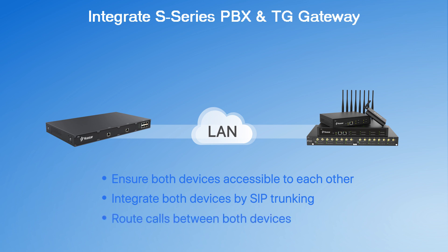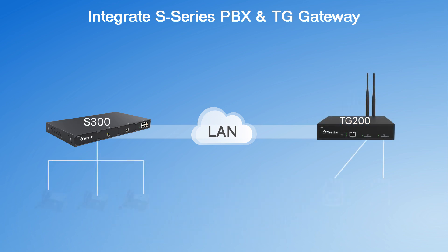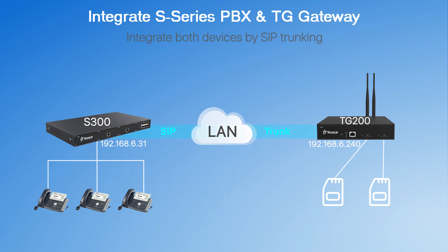The only thing left is figuring out the call routing. Take this scenario as an example: the S300 and TG200 have been deployed in the same local network environment. Both devices are assigned a specific private IP, so they're accessible to each other. Our job is quite simple — create a peer trunk between them.